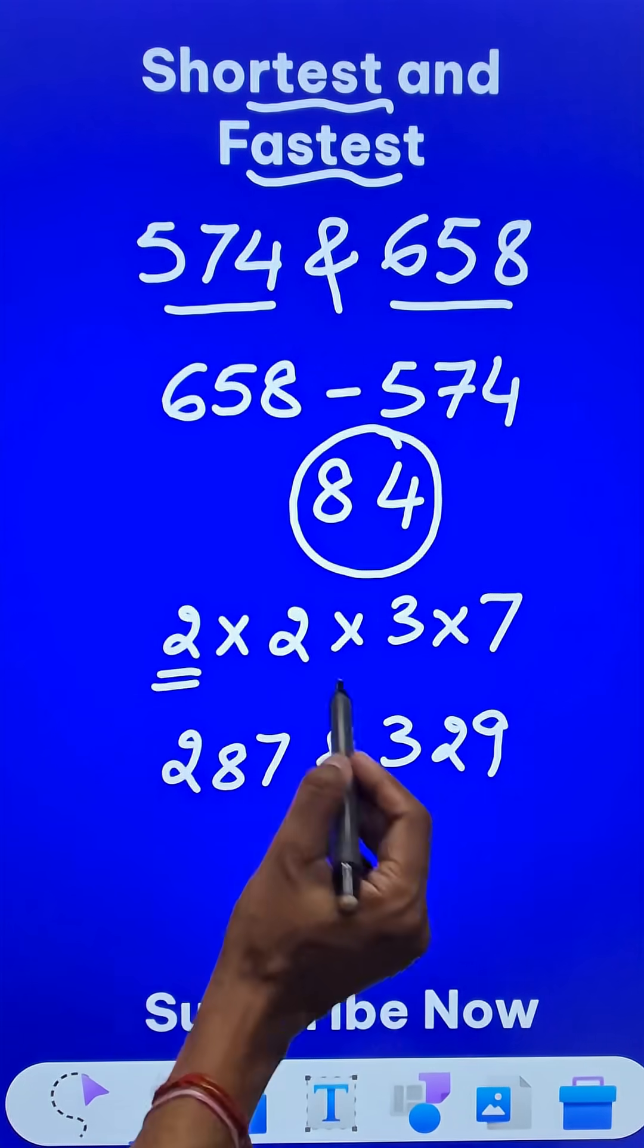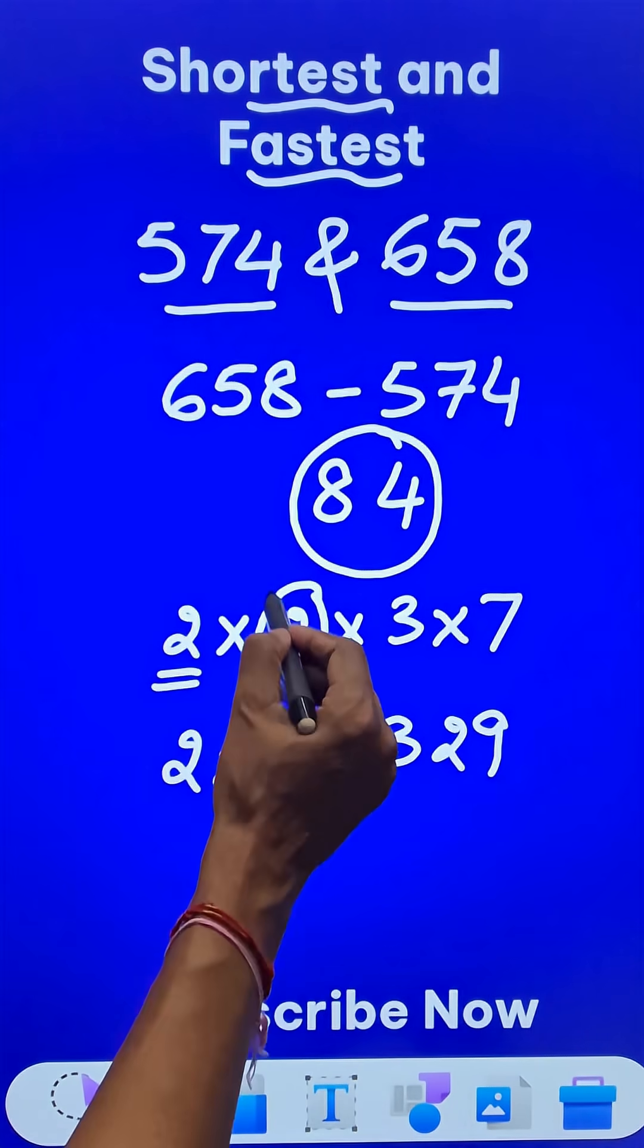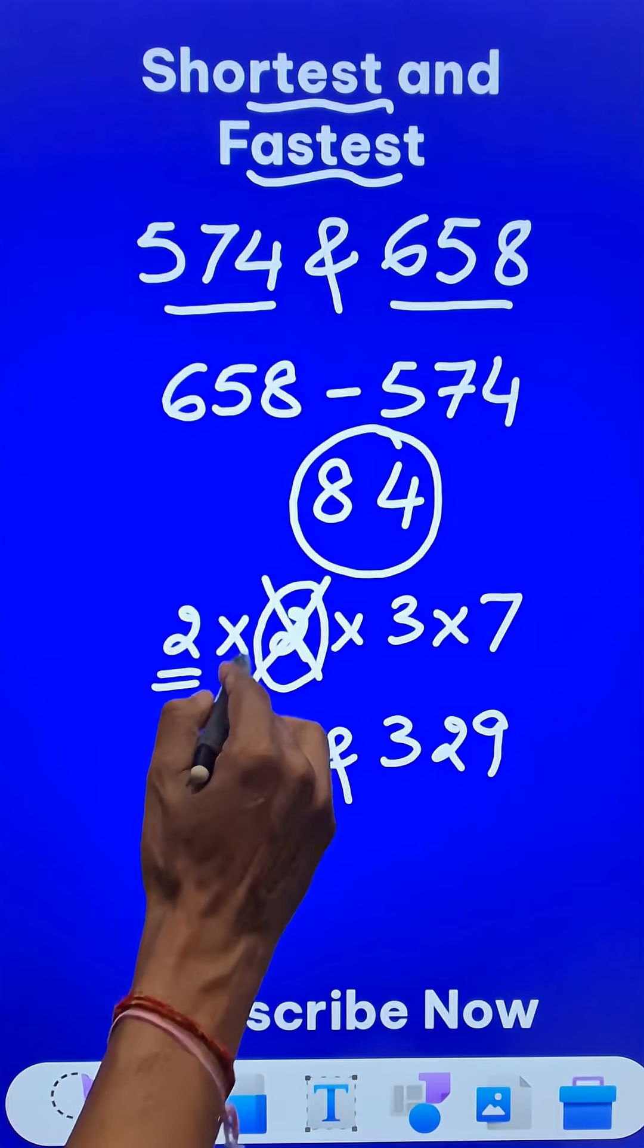Now these are odd numbers. So the next 2 is not going to divide them, right? So we cancel this out.